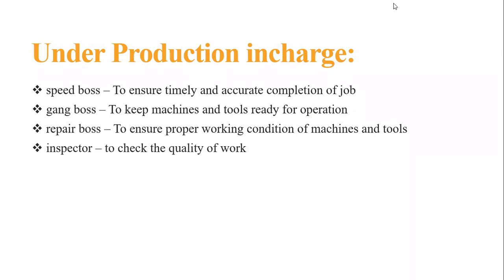Next we have the repair boss. What does the repair boss do? He ensures proper working conditions of machines and tools. The gang boss has kept the machines and tools ready for the operation and they are actually working. In case any machinery breaks down and needs repairs and maintenance — who is responsible for that? The repair boss. So he handles maintenance of machinery and tools.